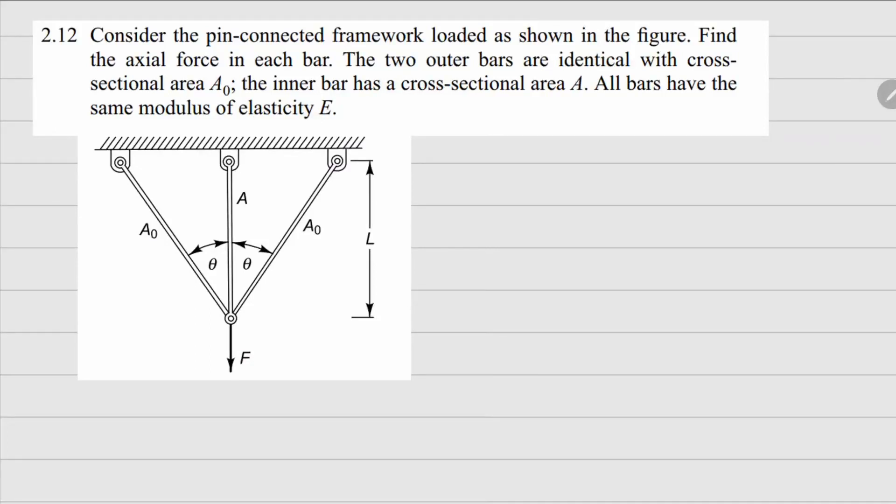This one is problem 2.12. In this one there's a pin-connected framework that is loaded with this force F right here. There are three members here. The middle one has a cross-section area A, and the outer ones have cross-section area A0. All of them have the same elastic modulus E, and we need to figure out what are the individual forces in these members.